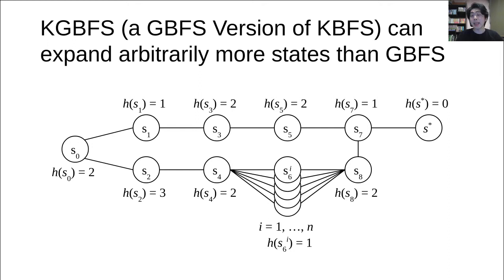As a theoretical result, we found a pathological example where K-GBFS can expand arbitrarily more states than GBFS. K-GBFS is a GBFS version of KBFS. This example contains more than N states, including S6-1 to S6-N. GBFS expands only six states following the red path. This is because S2 has the H value of 3, and GBFS never enters a region beyond the S2.